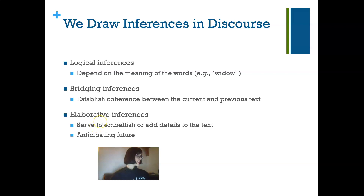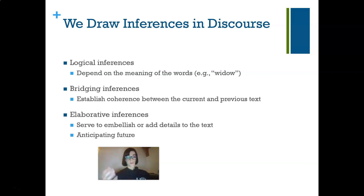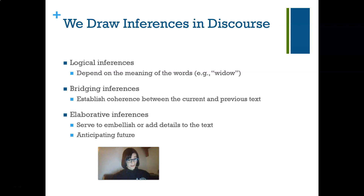Finally, we have elaborative inferences, which are forward-acting — whereas bridging inferences are backward-acting. They serve to embellish or add details to the text by anticipating what comes next. For example, 'the director and the cameraman were ready to shoot closeups when suddenly the actress fell from the 14th story' — we're going to assume she's probably dead. This is often called a predictive inference because we're making predictions about the future.